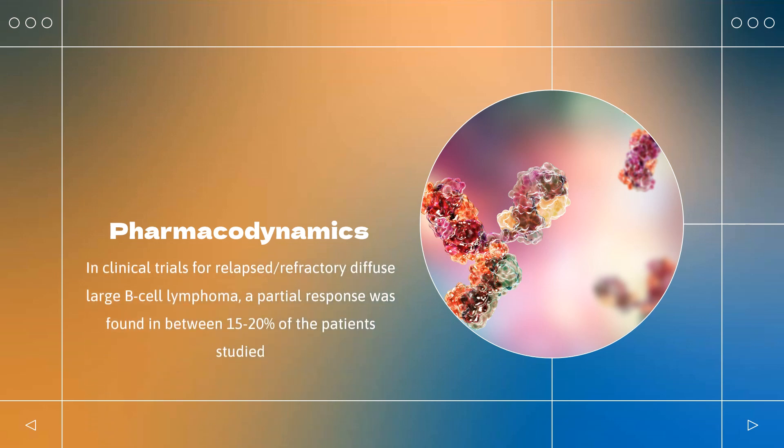Pharmacodynamics: In clinical trials for relapsed/refractory diffuse large B-cell lymphoma, a partial response was found in 15–20% of patients studied. For patients with relapsed/refractory Waldenström's macroglobulinemia, a partial response was observed in over 75% of patients. For patients with relapsed/refractory follicular lymphoma, a partial-to-complete response was obtained in approximately 54% of patients.